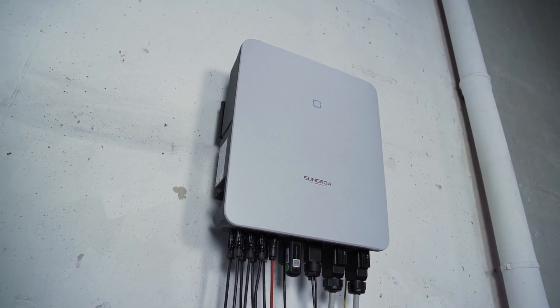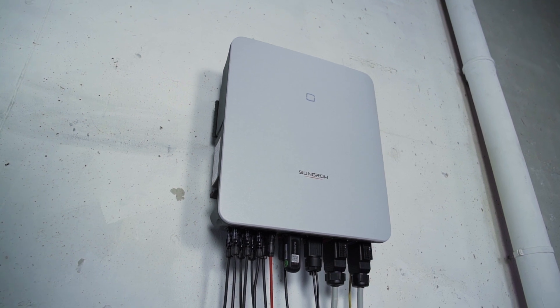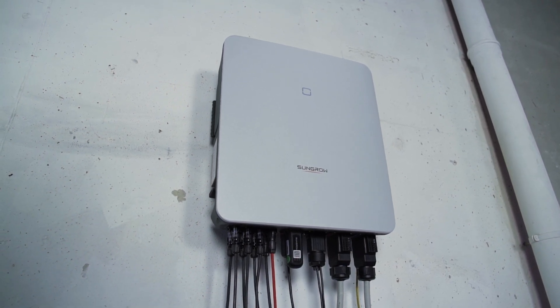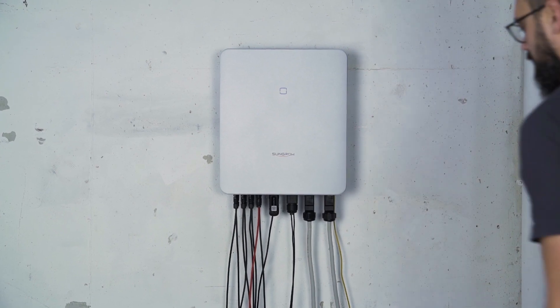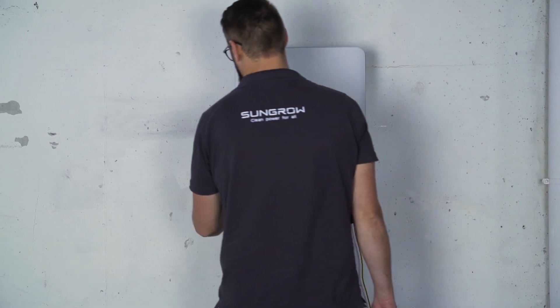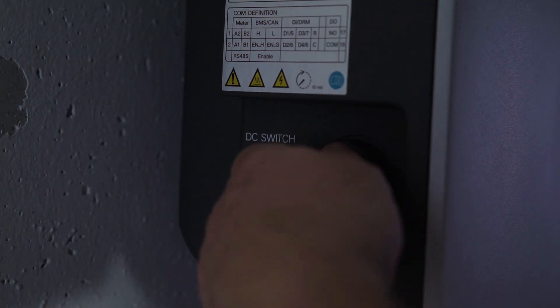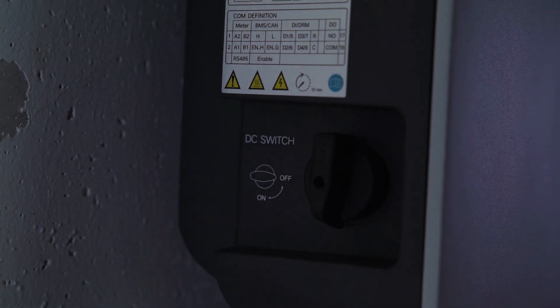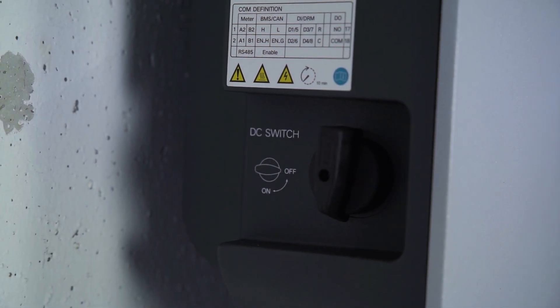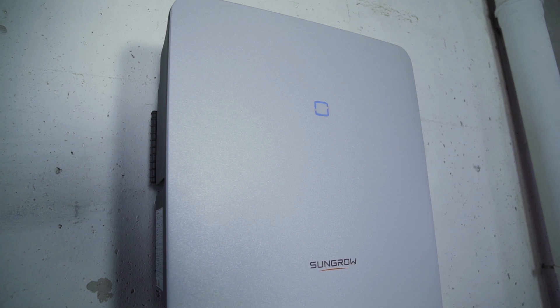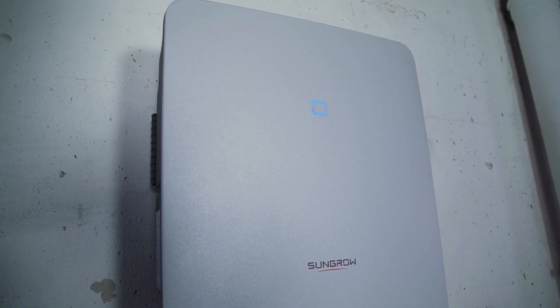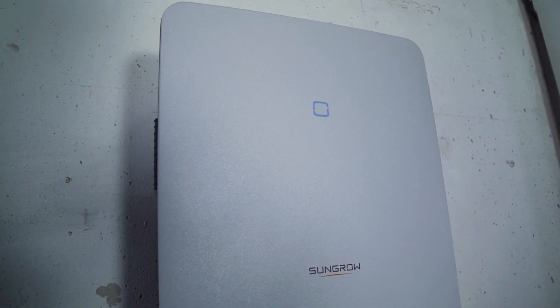Now it's time for commissioning. First you have to switch on the AC circuit breaker. Next, set the DC switch on the left side of the inverter to the on position to connect the inverter to the PV generator. A look at the LED light tells you if everything works properly. If the light shines continuously blue, the inverter is ready for use.